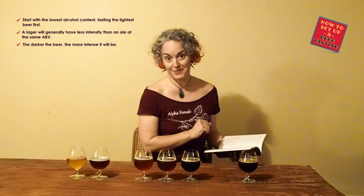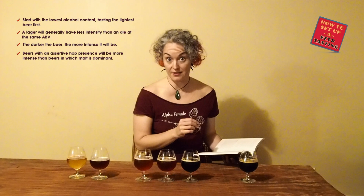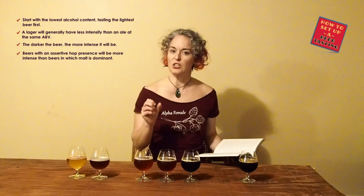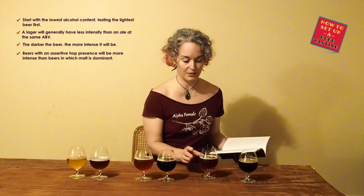Next step: beers with an assertive hop presence should go after beers with a strong malt presence. In the case of these beers, the only one I would classify as having an assertive hop presence is the American Amber Ale. So the American Amber Ale is going to go after the Milk Stout, which is the malt-forward beer.